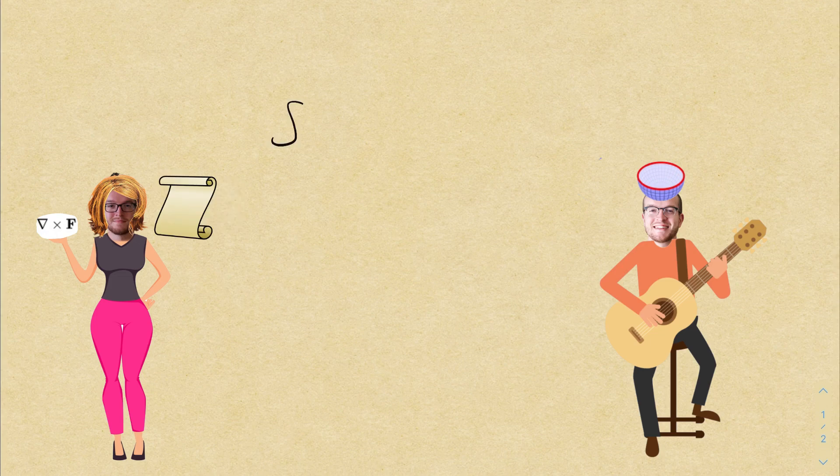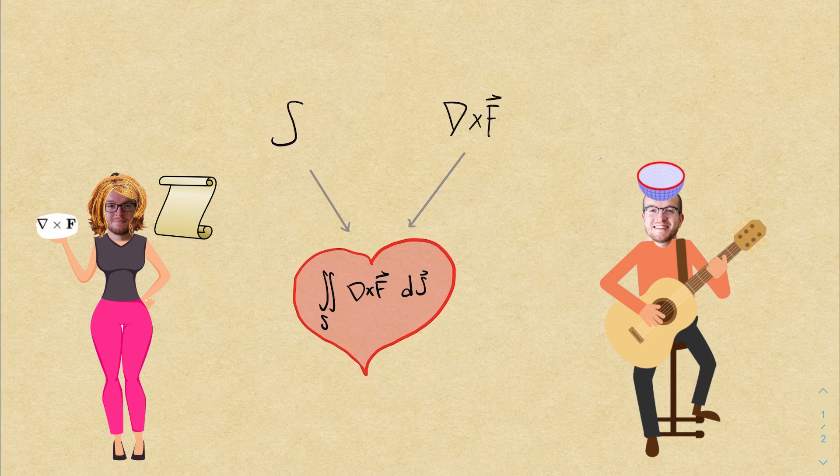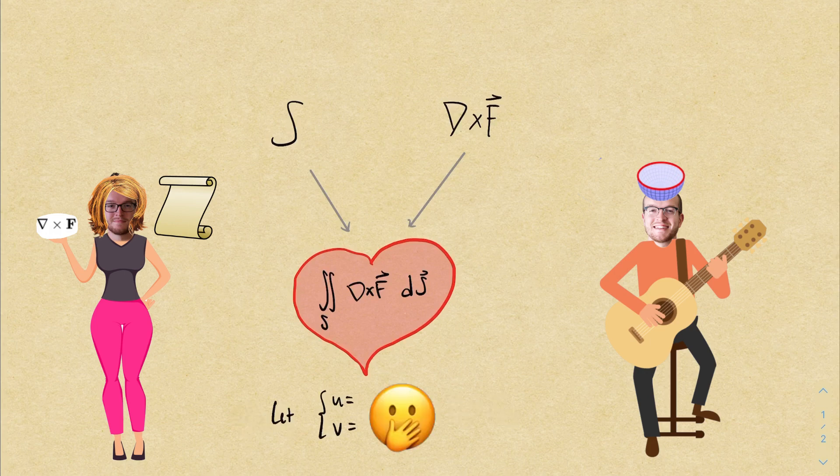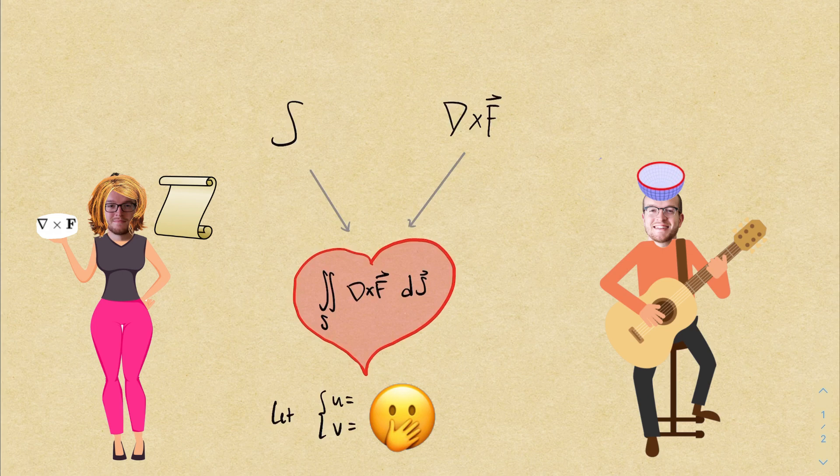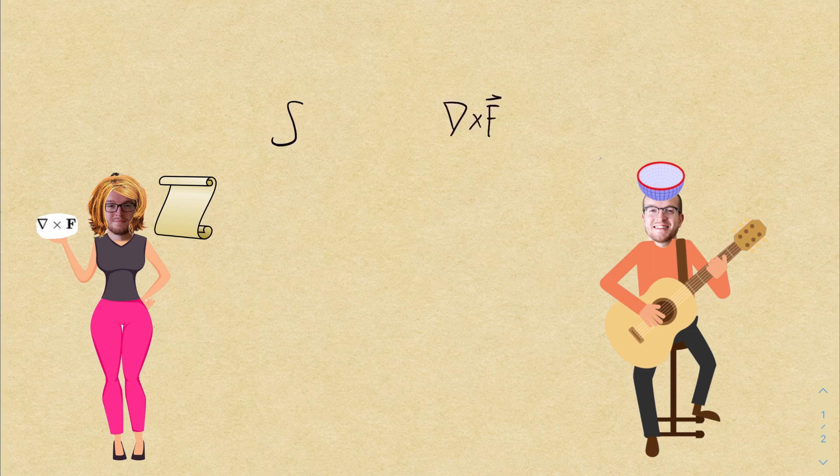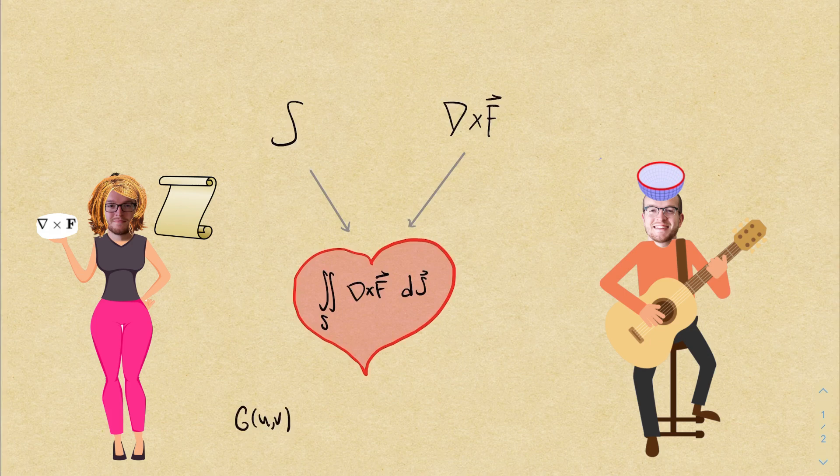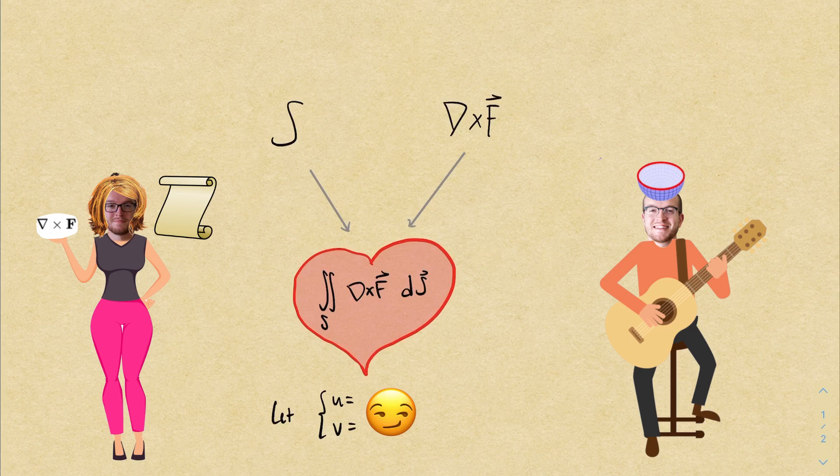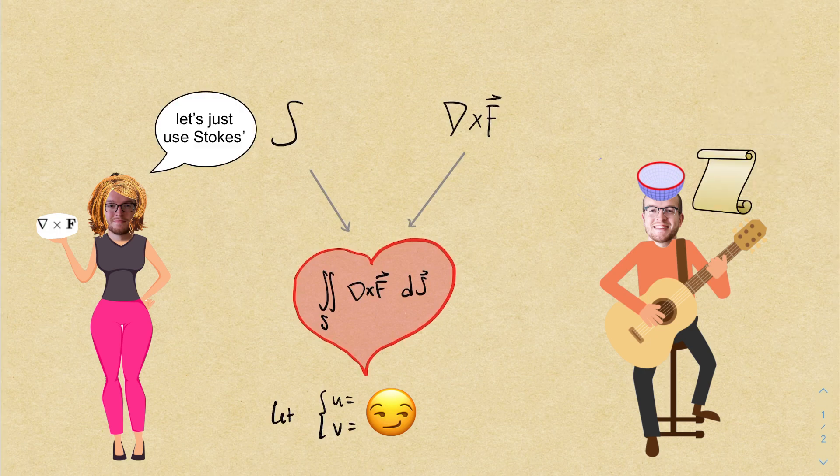I've got the surface, you've got the curl. It's a formula for love so come and be my girl. It's a formula for love so come and be my girl. I've got a substitution that'll rock your world. Here's all she wrote, let's just use Stokes.